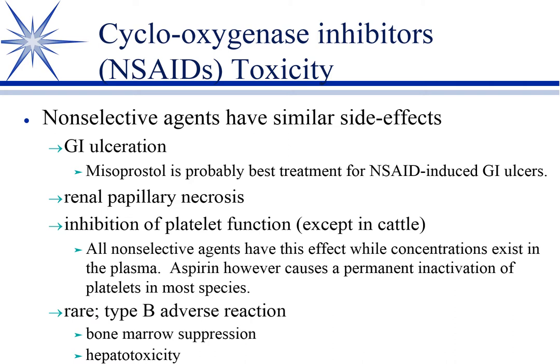If you ever go to have surgery, the surgeon will say you can't take NSAIDs for 48-72 hours because they don't want you bleeding. Aspirin is unique, however, because it permanently inactivates the thromboxane of the platelet. For all other NSAIDs, thromboxane is only inhibited while the drug is present — when the drug is gone, the platelet returns to normal function. With aspirin it's a permanent inhibition; the only way to get rid of it is to replace the platelet.